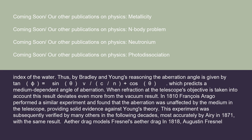An important example is a telescope filled with water. The speed of light in such a telescope will be slower than in vacuum, given by c/N rather than c, where N is the refractive index of the water. By Bradley and Young's reasoning, the aberration angle is given by tan(phi) = sin(theta)/(V/(c/N) + cos(theta)), which predicts a medium-dependent angle of aberration. When refraction at the telescope's objective is taken into account, this result deviates even more from the vacuum result. In 1810, François Arago performed a similar experiment and found that the aberration was unaffected by the medium in the telescope, providing solid evidence against Young's theory. This experiment was subsequently verified by many others, most accurately by Airy in 1871, with the same result.